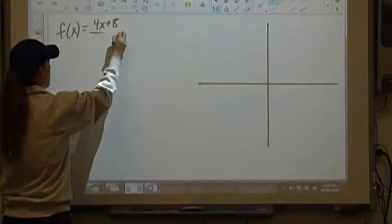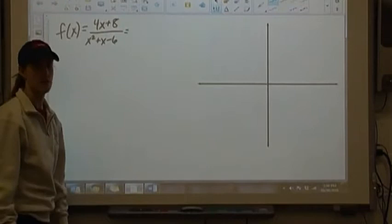F of x is equal to 4x plus 8 over x squared plus x minus 6. Again, we want to factor everything that we can.